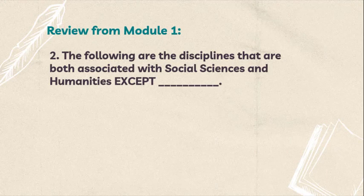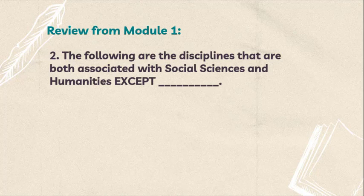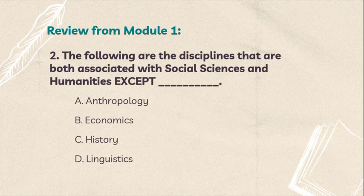Question number 2: The following are the disciplines that are both associated with social sciences and humanities except blank. A. Anthropology. B. Economics. C. History. D. Linguistics. The correct answer is letter B.